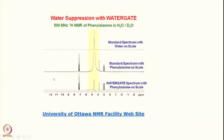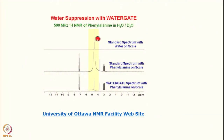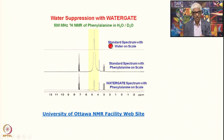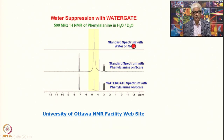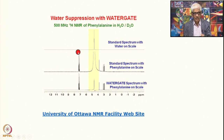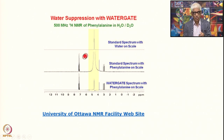Here is an experimental spectrum. You can see this is the normal experimental spectrum recorded in water. The sample is phenylalanine dissolved in water at a small concentration. This is the normal spectrum without doing anything — you can only see water, nothing else.